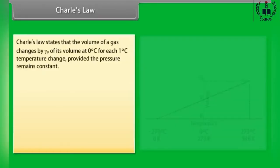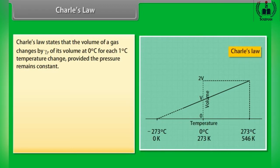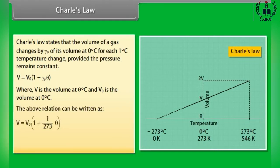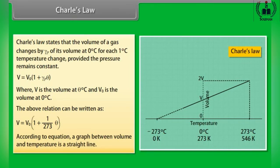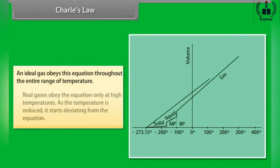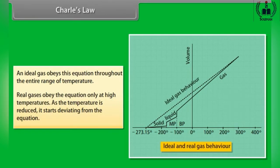Charles' Law states that the volume of a gas changes by 1/273 of its volume at 0°C for each 1°C temperature change, provided the pressure remains constant. V equals V₀ multiplied by (1 + γ_P·θ), where V is the volume at θ°C and V₀ is the volume at 0°C. This relation can also be written as V equals V₀ multiplied by (1 + θ/273). According to this equation, a graph between volume and temperature is a straight line. An ideal gas obeys this equation throughout the entire range of temperature, while real gases obey it only at high temperatures. As the temperature is reduced, real gases start deviating from the equation.